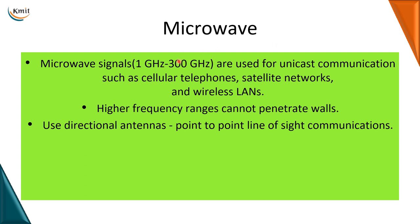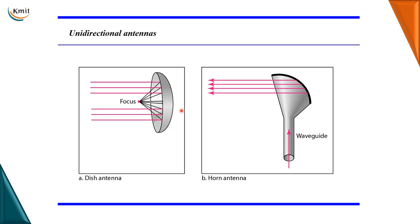Microwaves have a spectrum of 1 gigahertz to 300 gigahertz and are used for unicast communication, such as cellular telephones, satellite networks, and wireless LANs. They cannot penetrate walls. Since microwaves use line-of-sight communication — point-to-point transmission in a straight line — we use directional antennas such as dish antennas or horn antennas.